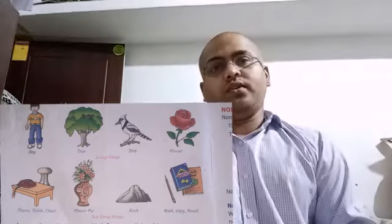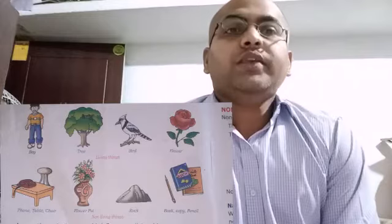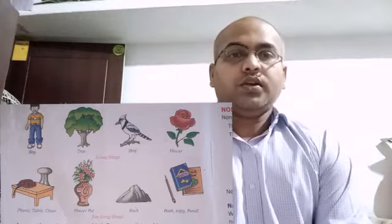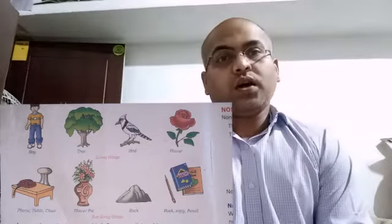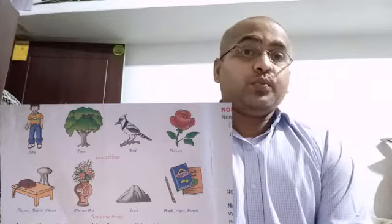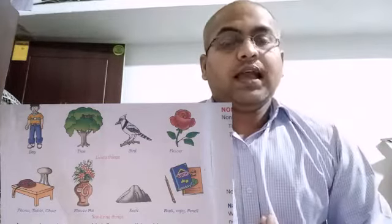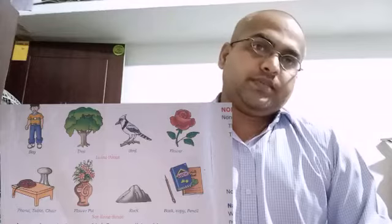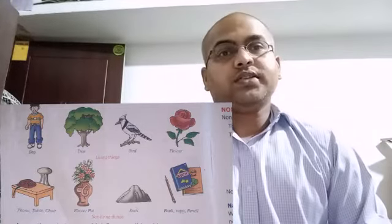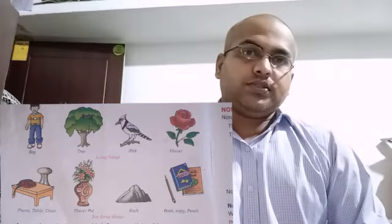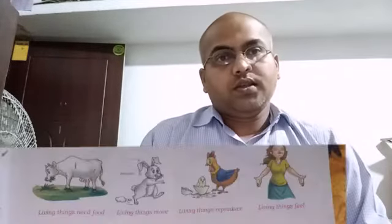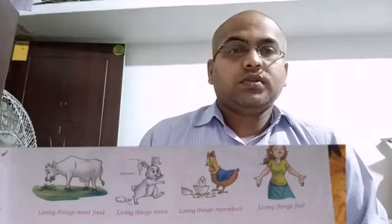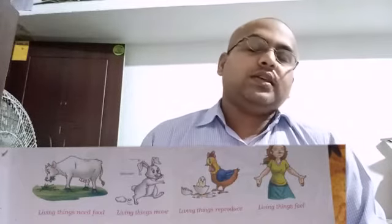Now we are going to discuss about living and non-living things. First, living things: living things need food to eat, they need water to drink, they need air to breathe, they feel and they grow, and they move from one place to another. These are called living things. For example, a plant — plants need food, need water, need air, they grow and they feel also.